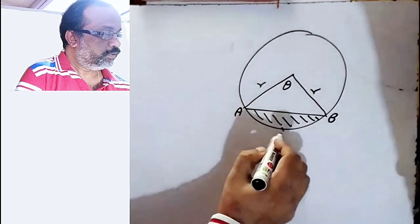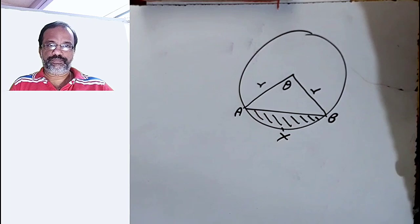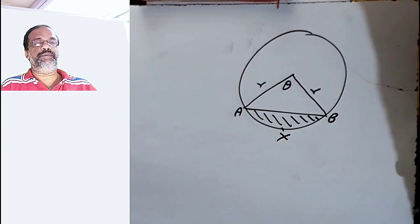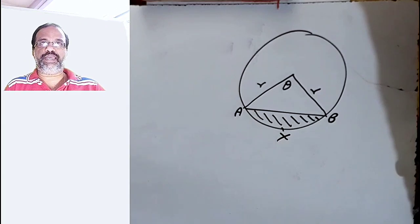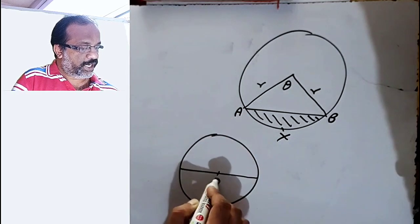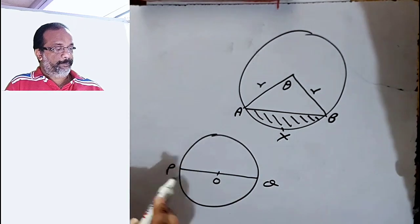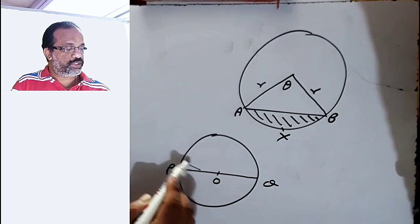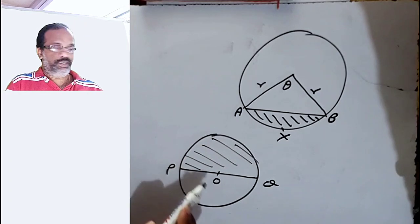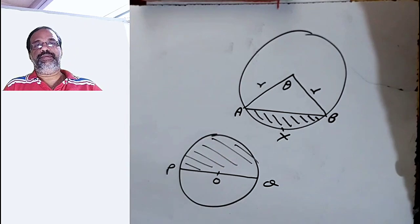The smaller segment of a circle is called the minor segment and the larger one is called the major segment. I have drawn a circle with a center. PQ is the diameter, so we have two semicircles — one shaded, one unshaded. Each of these will be called a semicircular segment.